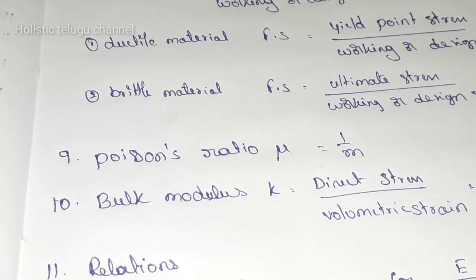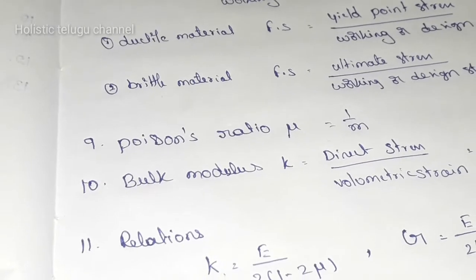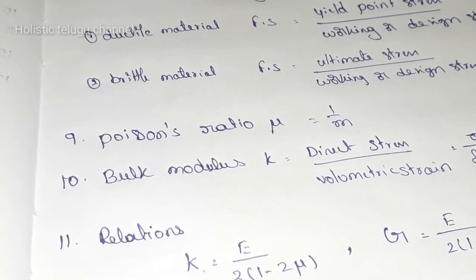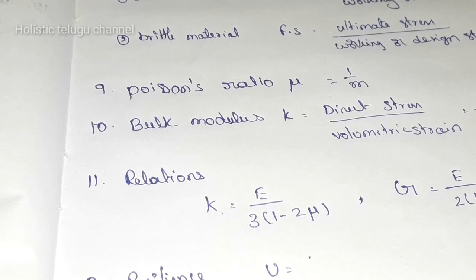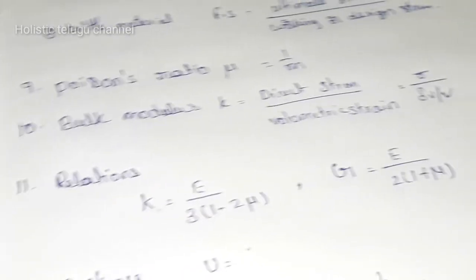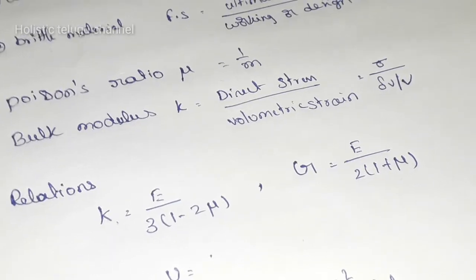Bulk modulus K equals direct stress by volumetric strain. Relations: K equals E by 3 into 1 minus 2 mu. G equals E by 2 into 1 plus mu.